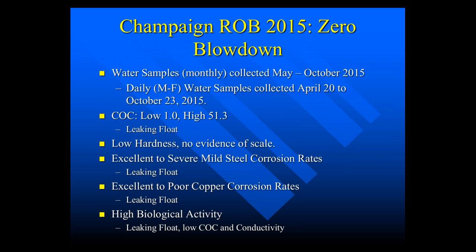Now we're into 2015 with zero blowdown. Water samples were collected monthly May to October, but we also collected samples daily Monday through Friday from April 20th through October 2015. The cycles of concentration ranged from 1 to 51.3. They were down at 1 cycle of concentration because of a leaky float. We had low hardness with no evidence of scale. Mild steel corrosion rates ranged from excellent to severe — the severe rates were caused by the leaky float. Copper similarly ranged from excellent to poor, also due to the leaky float. High biological activity was observed, linked to low cycles of concentration and conductivity caused by the float problem.